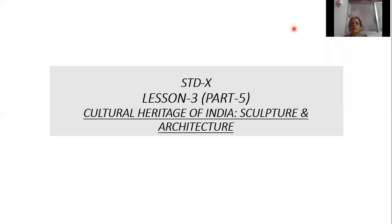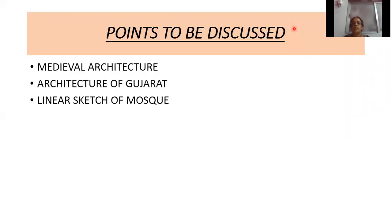Good morning students. Today I am going to explain the last part of lesson number three, cultural heritage of India's culture and architecture. The points to be discussed today are medieval architecture, architecture of Gujarat, and linear sketch of a mosque.